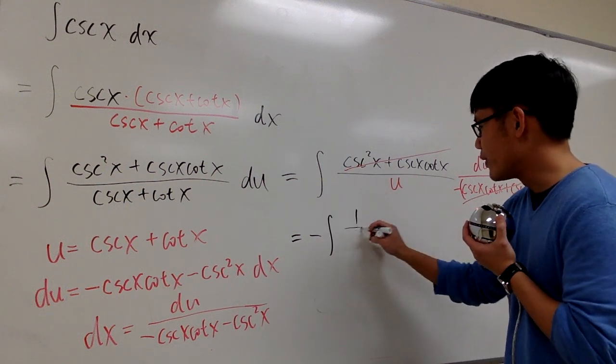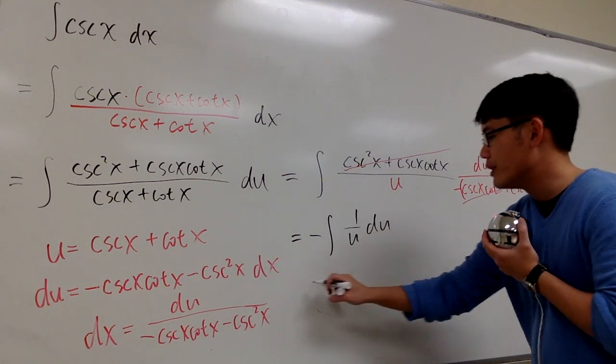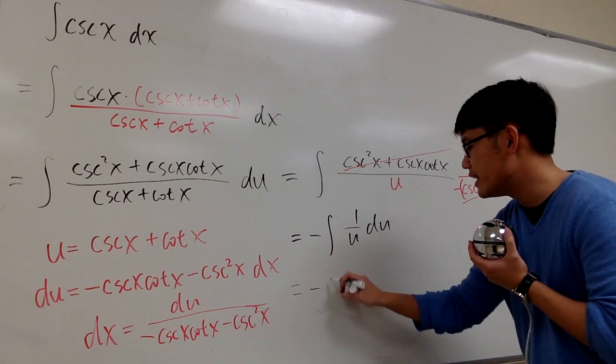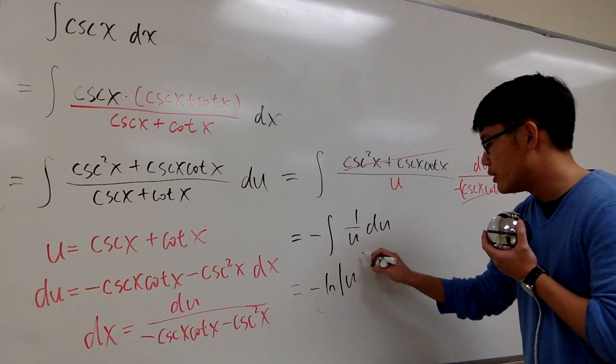Integral. And then we have 1 over u du. And of course, this right here will be negative ln absolute value of u.